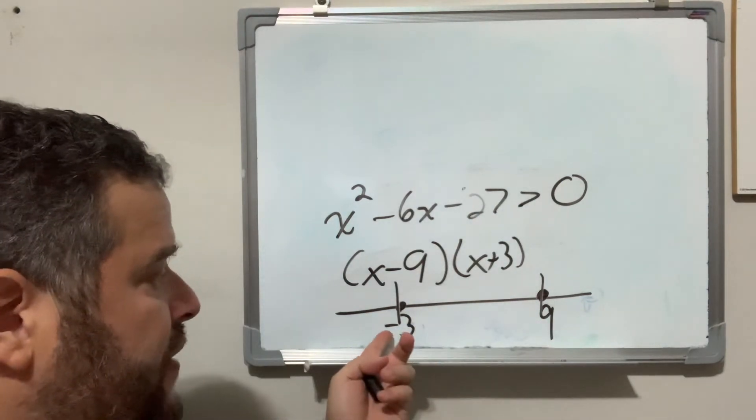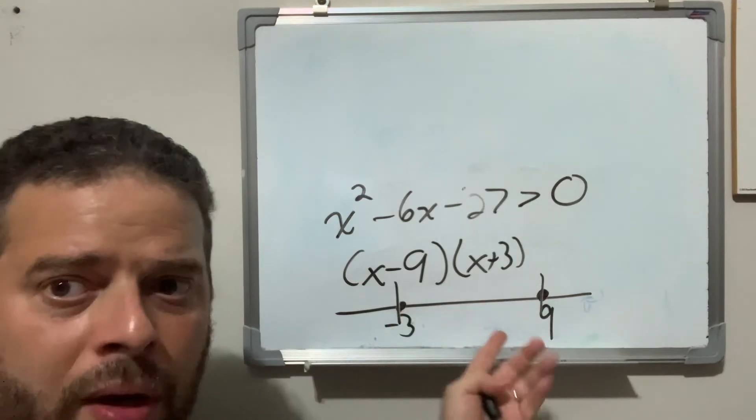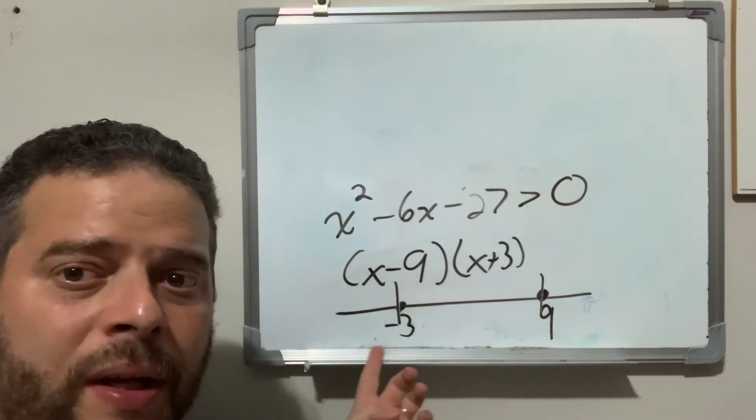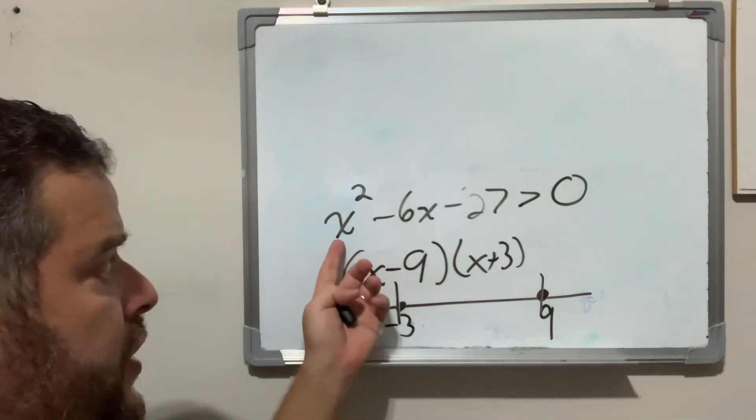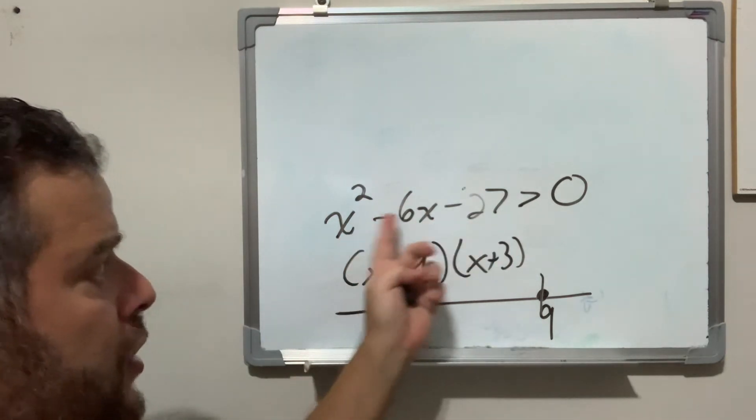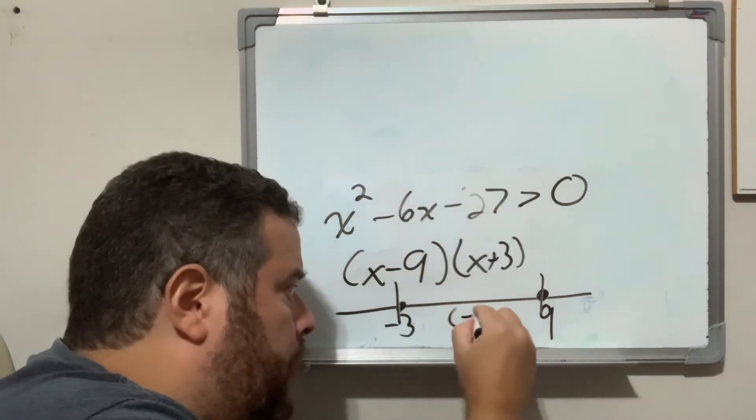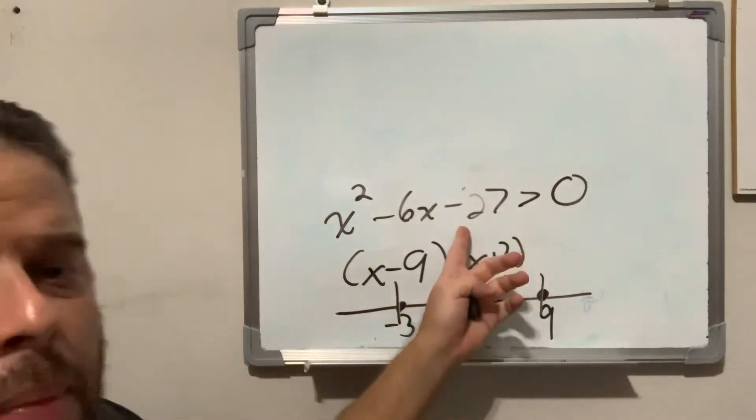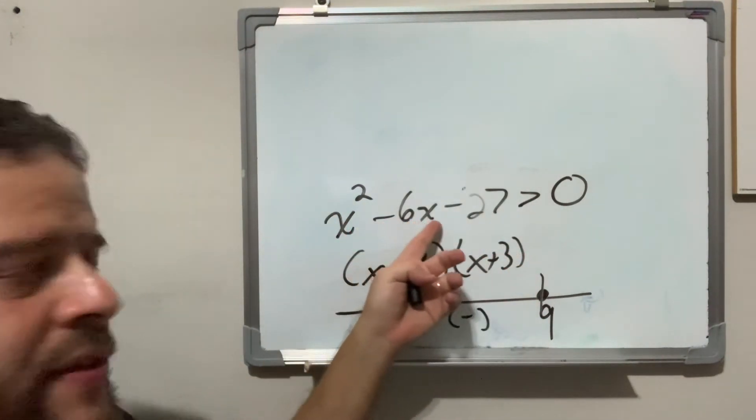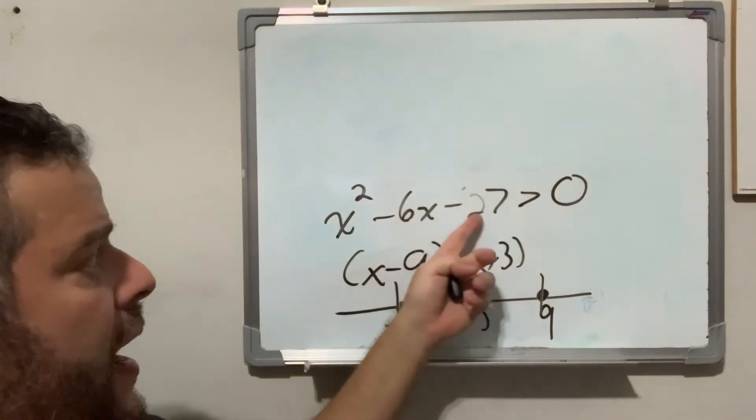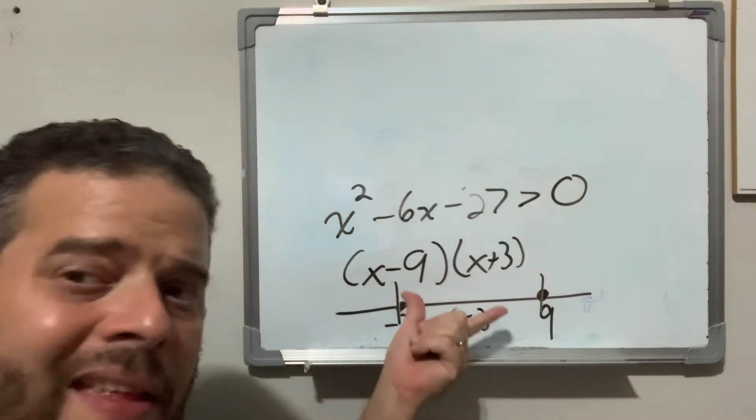So for example, here, since I have negative 3 and 9, and I use this zone, I'm going to pick any value between negative 3 and 9. Just use zero. You're going to plug zero into your original equation, and you're going to be left with a negative number. All you care about is the sign, not really a number. So this goes away, zero squared, negative 6 times zero is zero. And you're left with a negative number. So I'm going to put a negative in that zone.